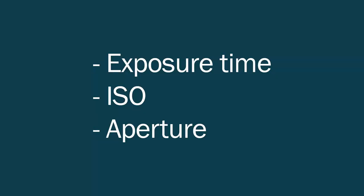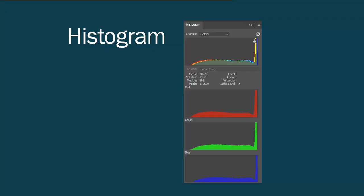The elements that decide the exposure are exposure time, ISO, and aperture. You also get a tool that lets you control if the exposure was correct, and that is the histogram.